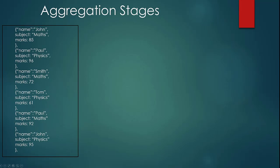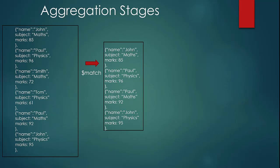Now let us see the same query with an example of some data. This is the data set in your results collection — there is name, subject, and marks of different students. When we apply the first stage of match to match marks greater than or equal to 85, you are left with only four documents which match that criteria.